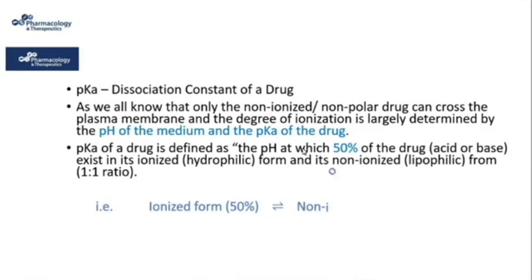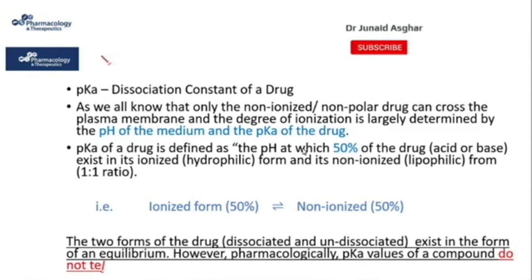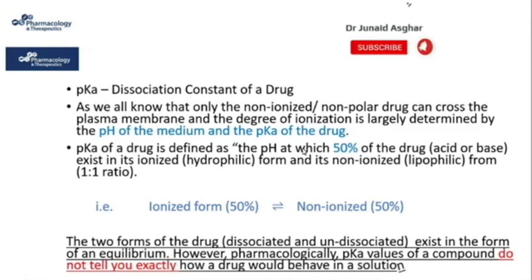In other words, the ionized form coexists with the non-ionized fraction in a 50 to 50% or 1 to 1 ratio. The two forms — dissociated and undissociated — exist in equilibrium. However, pharmacologically, pKa values of a compound do not tell you exactly how a drug would behave in a solution, and we will try to find out the answer to this question later in this video.